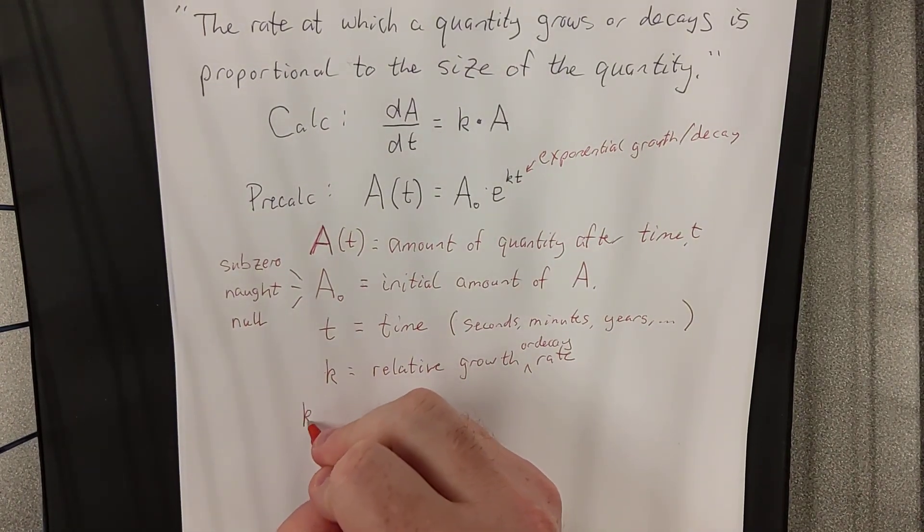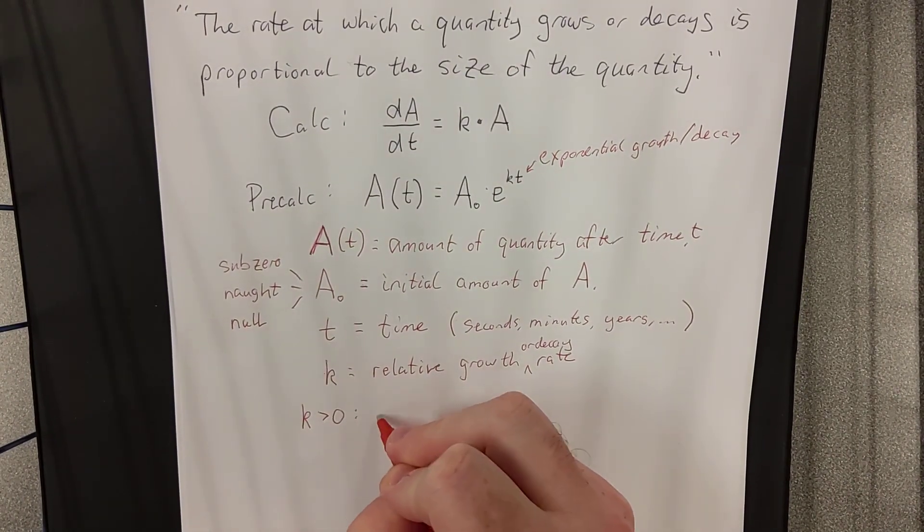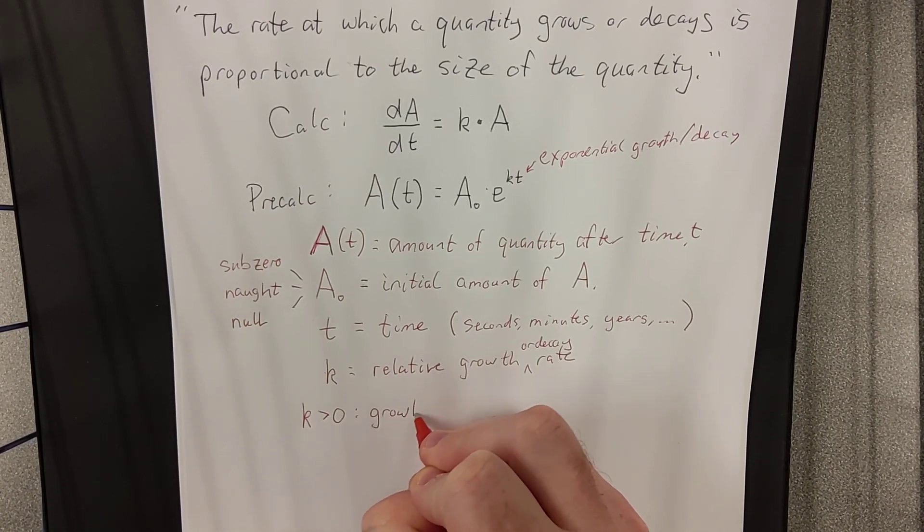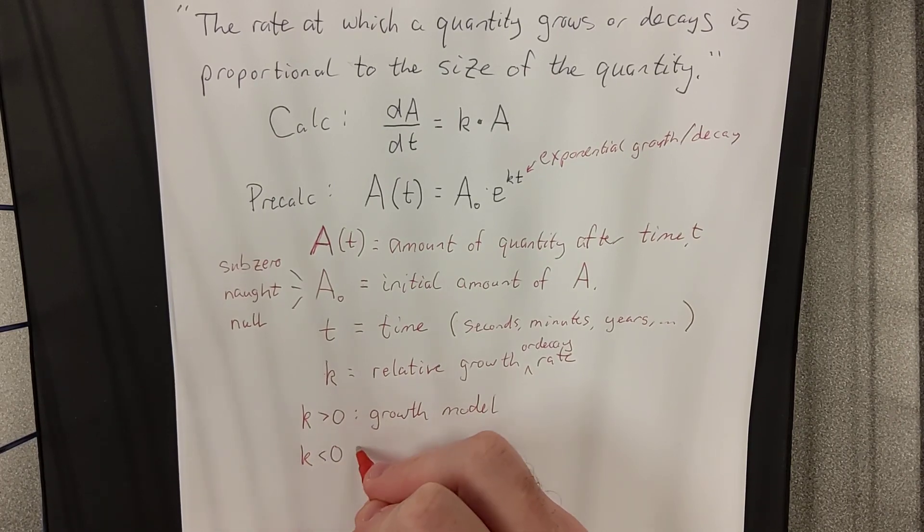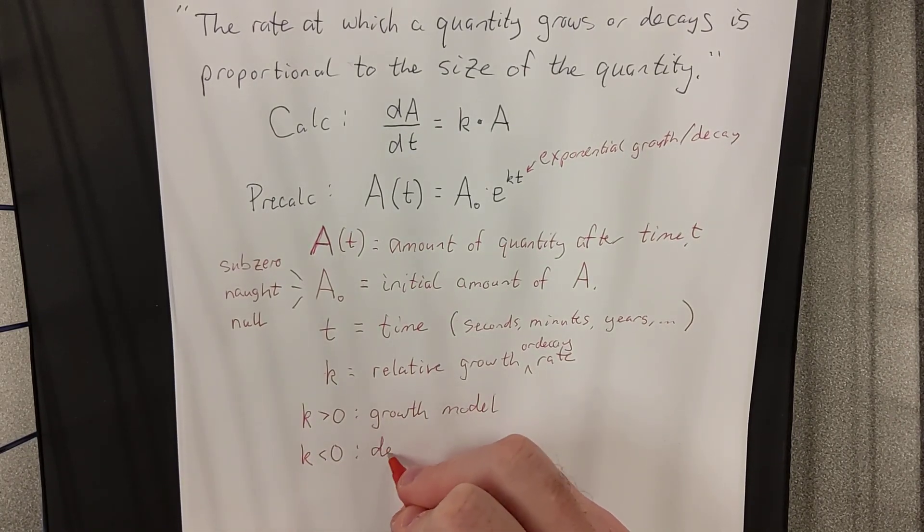Now, with that in mind, if k is greater than zero, then we are dealing with a growth model. If k is less than zero, then we are dealing with a decay model.